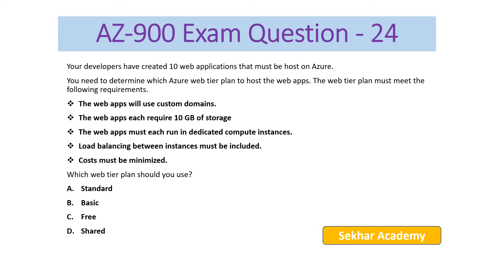AZ-900 Exam Question number 24. Your developers have created 10 web applications that must be hosted on Azure. You need to determine which Azure Web Tier Plan to host the web apps. The Web Tier Plan must meet the following requirements: the web apps will use custom domains; each app requires 10 GB of storage; apps must each run in dedicated compute instances; load balancing between instances must be included; and cost must be minimized.